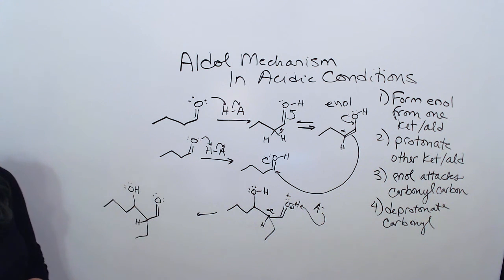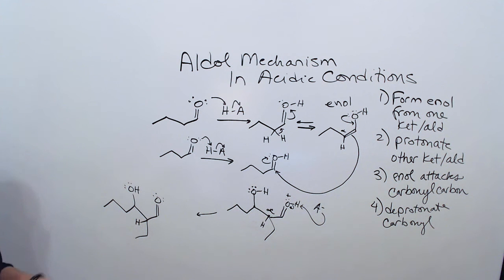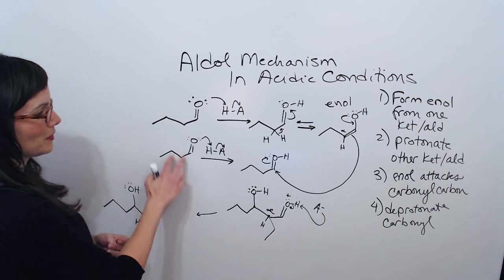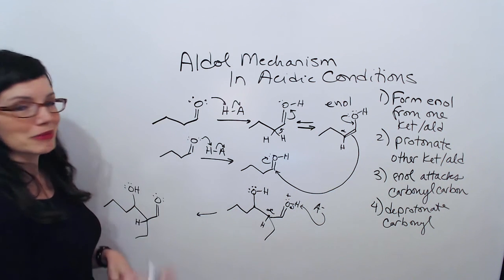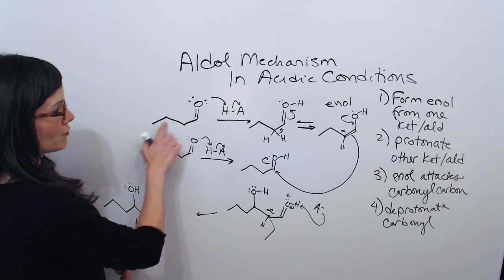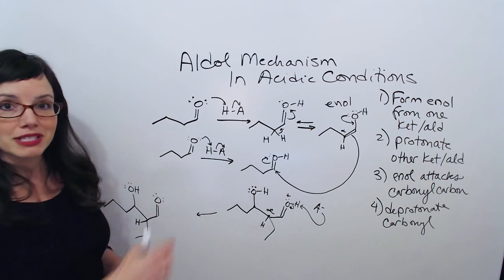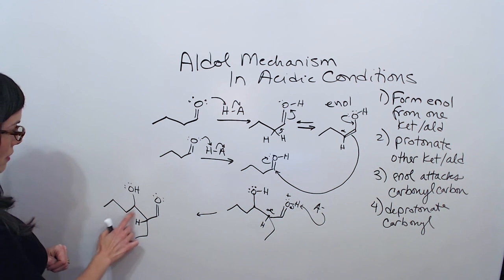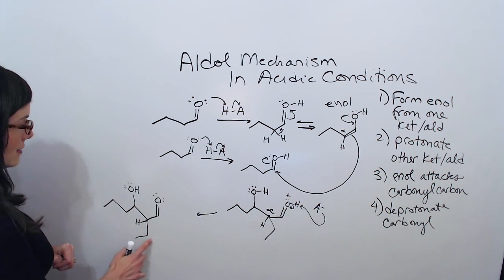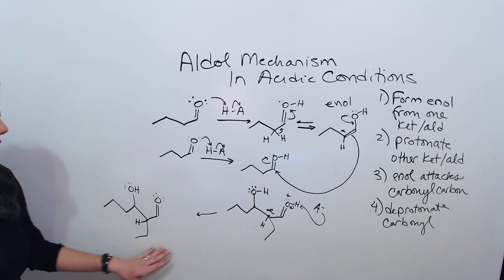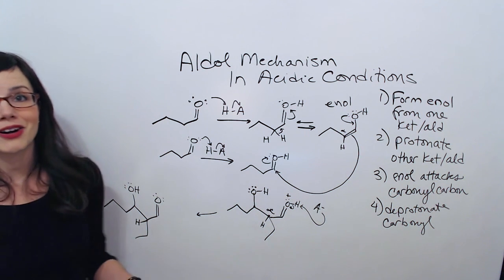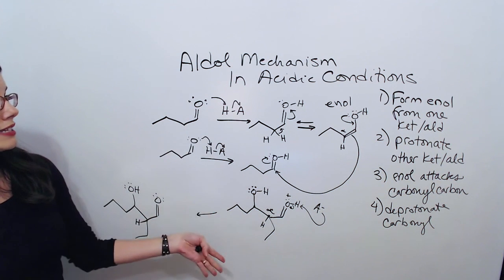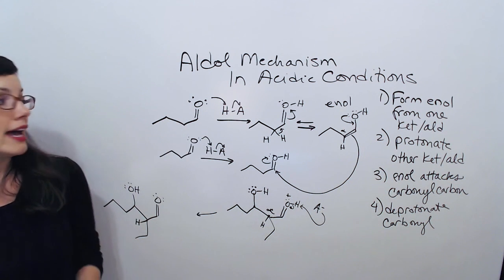Another thing you'll want to check for is to make sure you have the same total number of carbons as your two starting materials. So there are four carbons here and four carbons here, so this should have a total of eight carbons — and we do have eight. So this is our aldol condensation product, and again this mechanism was in acidic conditions. However, if we had done this in basic conditions, the product would be identical.